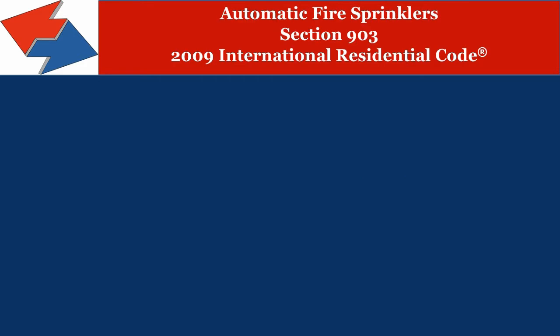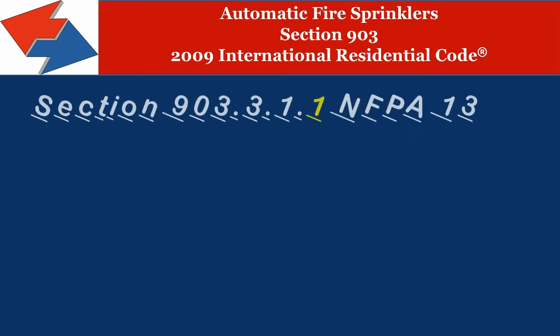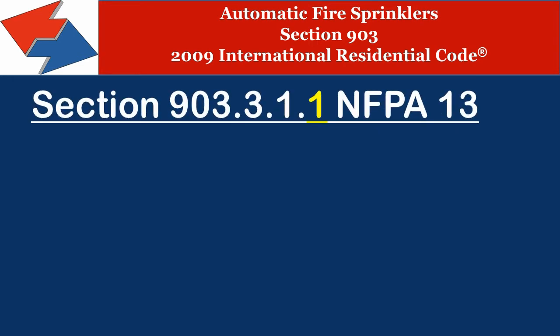There are three types of automatic fire sprinklers discussed in Chapter 9 of the 2009 International Building Code. The first is NFPA 13, which is referenced in Section 903.3.1.1.